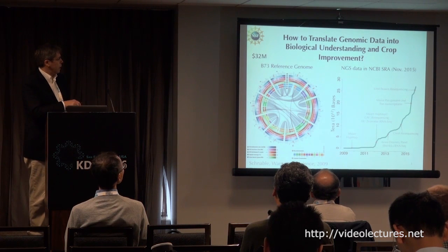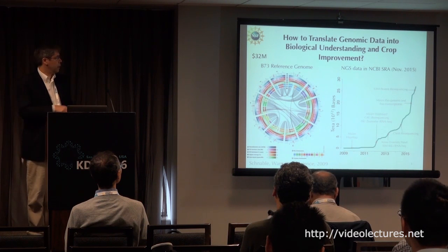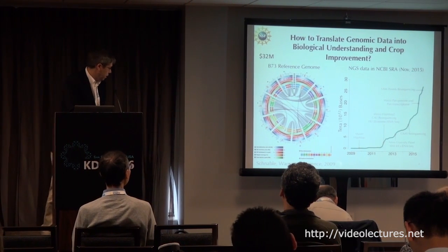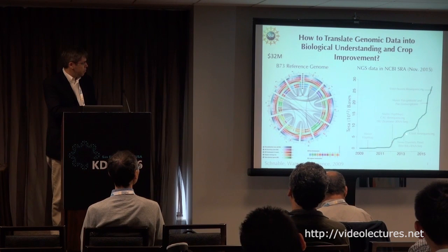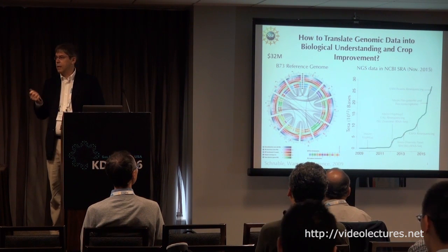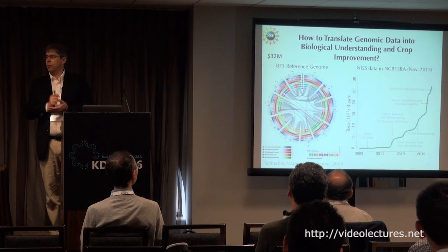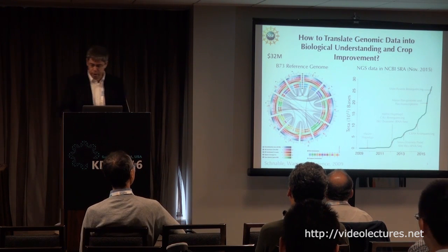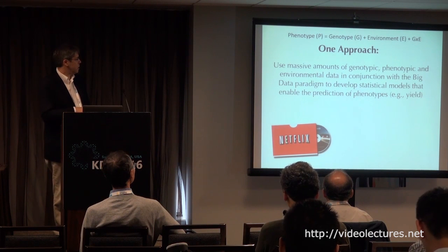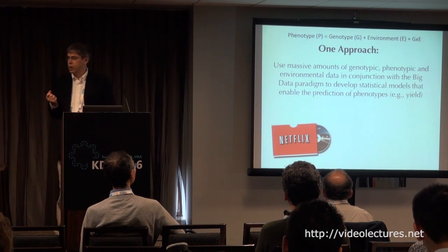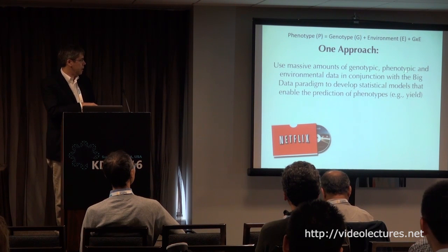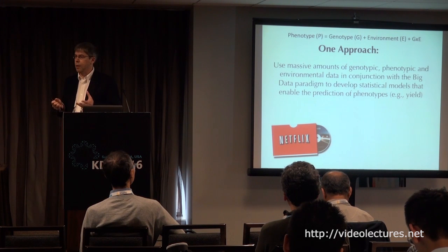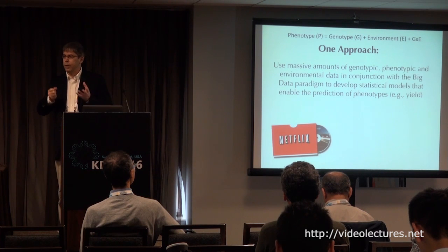A major focus of my lab is how to translate genomic data into both biological understanding and crop improvement. We were part of the team that sequenced the maize genome back in 2009. Since then, public databases have accumulated vast amounts of DNA sequence data available to anybody in the world. The challenge is how do we use those data to make these advances? One approach — the one I'm focusing on today — is to use massive amounts of genotyping data in combination with large phenotyping data sets and environmental data in a big data paradigm to develop statistical models that enable us to accurately predict traits in the field.